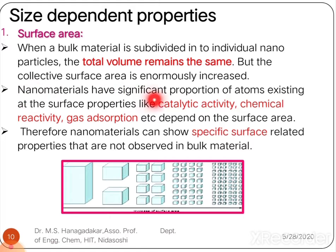Nanomaterials have significant proportions of atoms existing at the surface. Properties like catalytic activity, chemical reactivity, and gas absorption depend on the surface area of the nanoparticles. Therefore, nanoparticles can show specific surface-related properties that are not observed in bulk materials.